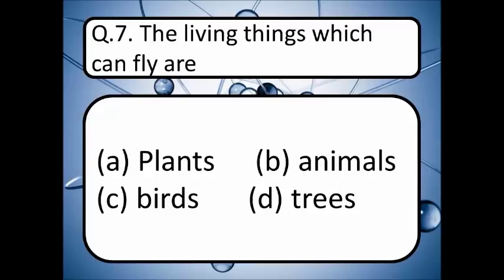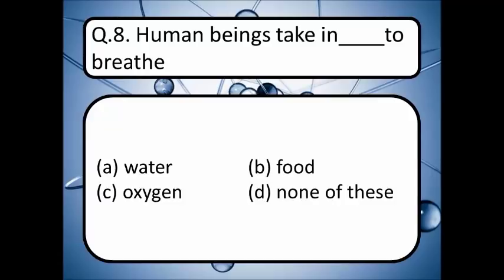The living things which can fly are plants, animals, birds, or trees. The correct answer is option C — birds. Next: human beings take in dash to breathe. Read your options A, B, C, or D, write your answer in the comment box. The correct answer is option C — oxygen.